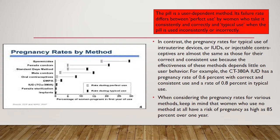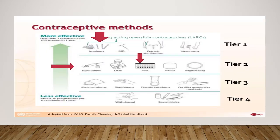The pill is a user-dependent method. Its failure rate differs between perfect use by women who take it every day at the same time, and typical use when the pill is used inconsistently or incorrectly. This illustration provides a method for sharing information on contraceptive method effectiveness with patients, who tend to find this depiction easy to understand. Given the importance of method effectiveness in patient decision-making, it may be helpful to use an aid like this when counselling patients.